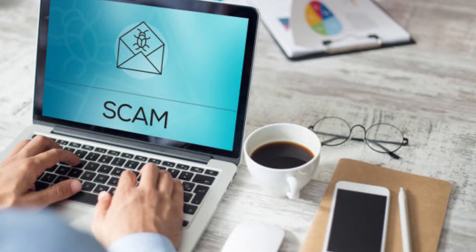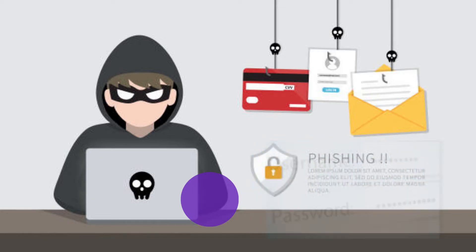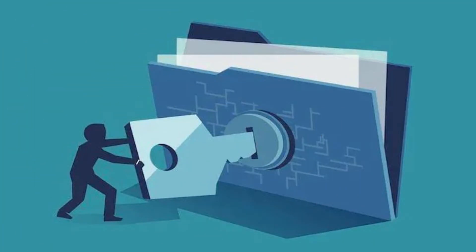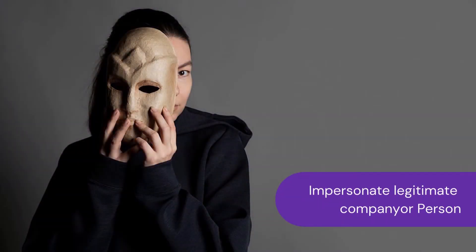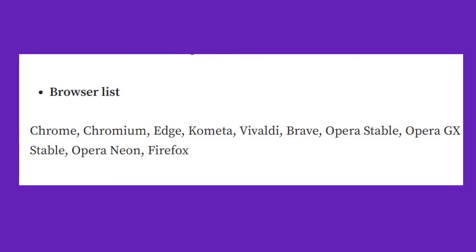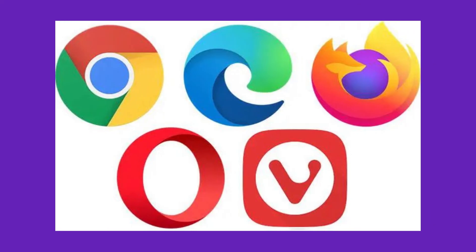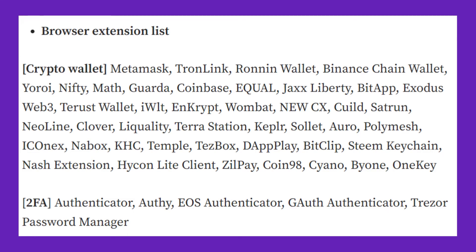Information stealers like Luma specialize in stealing sensitive data such as login credentials and bank details. Luma is typically distributed through clever disguises like cracked versions of popular software or even spear phishing emails that impersonate well-known companies. This malware targets a wide range of systems from Windows 7 to 11, and it goes after at least 10 different web browsers including Google Chrome, Microsoft Edge, and Mozilla Firefox. Luma has also been spotted targeting cryptocurrency wallets like Binance and Ethereum, along with browser extensions like MetaMask and Authenticator.